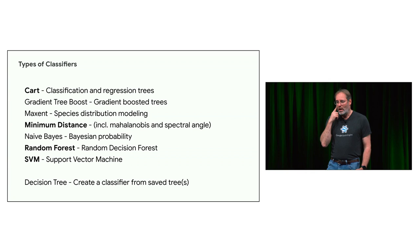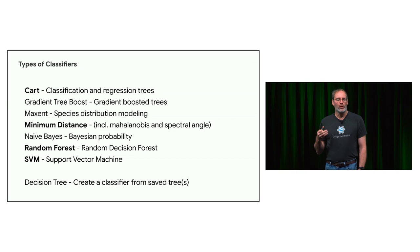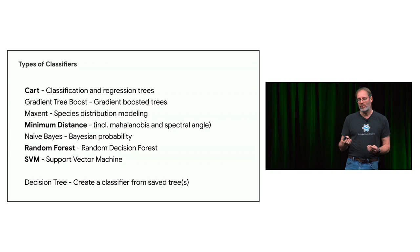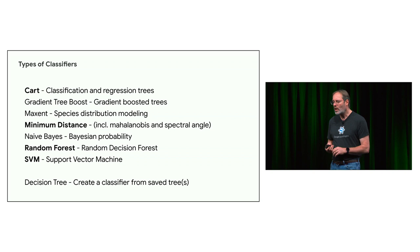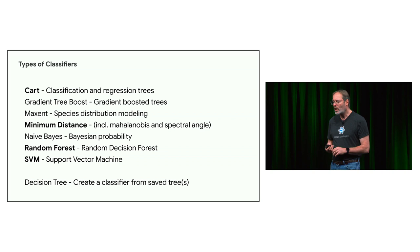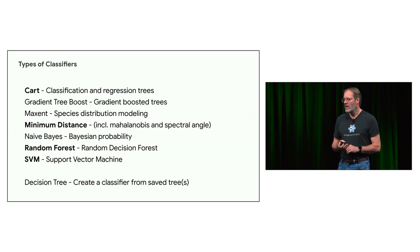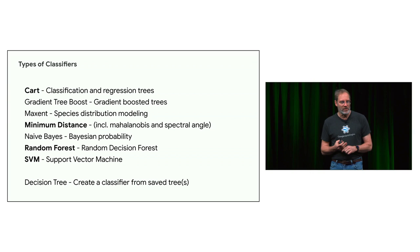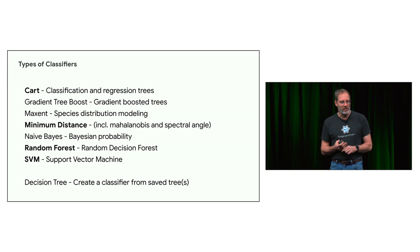Earth Engine has a bunch of different classifiers. Most people use Random Forest because it's easy — you don't have to think about it very much. If you really want to squeeze the most out of your classifier, SVM (support vector machines) might be the way, but that requires a lot of knob tuning. CART and Random Forest are basically the same thing: CART is one tree and Random Forest is a bunch of trees. There's also a minimum distance classifier, commonly used for things like spectral angle mapping with hyperspectral data.